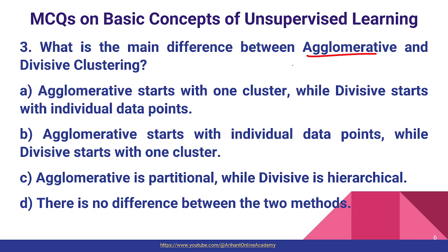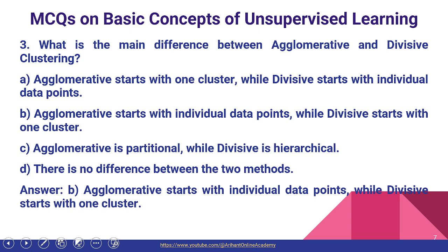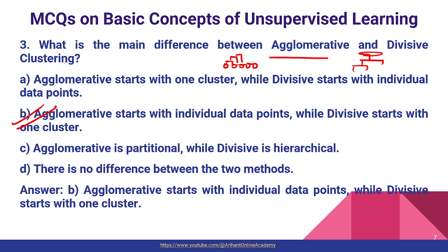Question number three: what is the main difference between agglomerative and divisive clustering? Agglomerative starts with individual data points while divisive starts with one cluster. Option B is the correct answer because in agglomerative, all data points are separated individually and by each iteration they merge. In divisive, all are initially in one cluster and after each iteration they are divided.